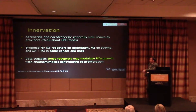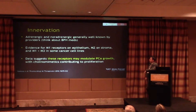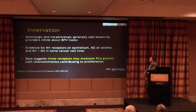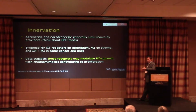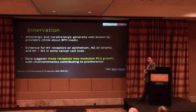There's evidence for multiple muscarinic receptors within the prostate — M1, M2, and M3 — located in different areas. Data suggests these receptors may modulate growth in the setting of prostate cancer. Cholinomimetics have been shown to contribute to proliferation, and anticholinergics may be relevant to benign disease, which will be discussed further.